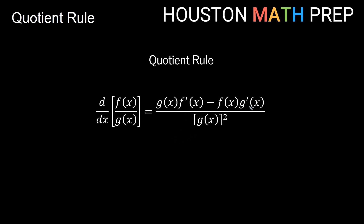A lot of people will actually write this quotient rule top a little bit differently. Here I have g times f prime minus f times g prime, and then we're all over g squared. The product rule was written as f prime times g plus f times g prime. Here this is really f prime times g, and this is really f times g prime — but with a minus in between instead of a plus. So you might think of the top as just the product rule with subtract instead of add, and then you have over g squared.